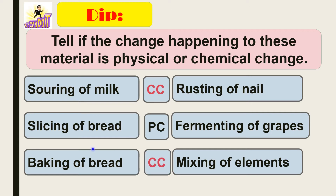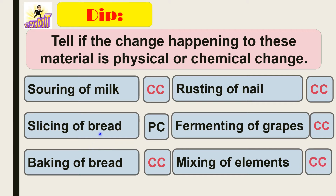Next, baking of bread — chemical change, because you need to bake. Rusting is chemical change. Fermenting of grapes is chemical change. And lastly, mixing of elements is chemical change.